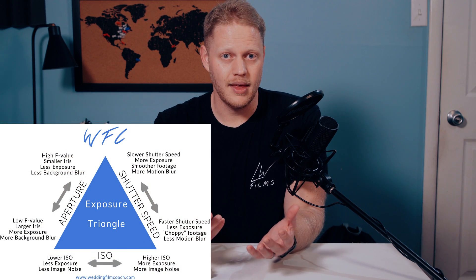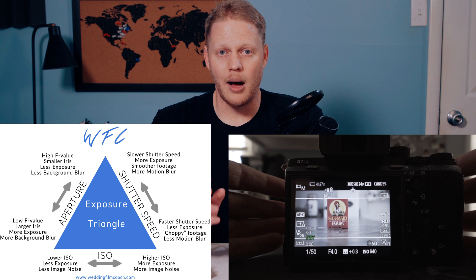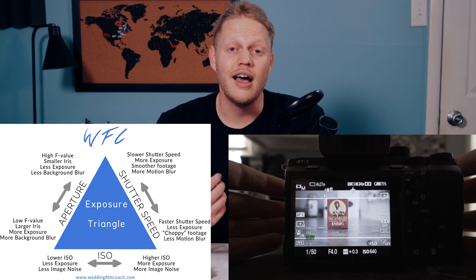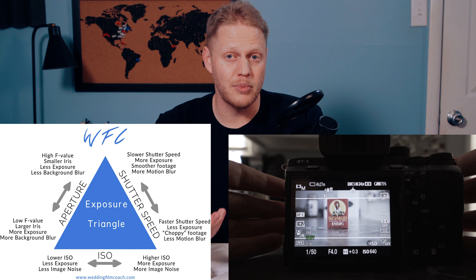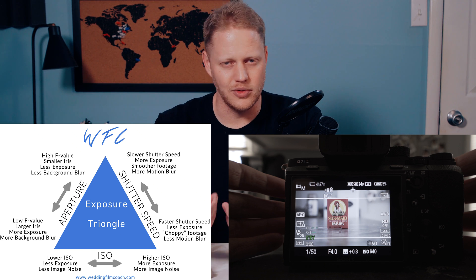We're going to focus on three terms: shutter speed, aperture, and ISO. These three functions control the exposure or brightness of your image. A great way to explain this is to use what people refer to as the exposure triangle. I'm going to change each of these settings individually to show you how they affect the exposure on your image, then we'll come back and talk about some more advanced ways to use these functions.